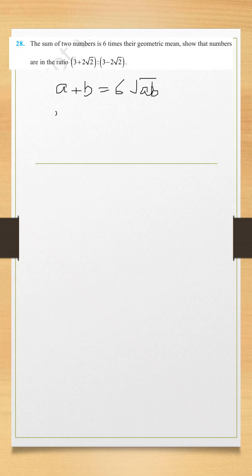We will square both the sides. A plus B whole square is equal to 6 squared or 36 AB. Correct?